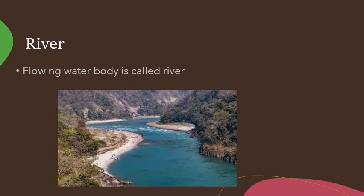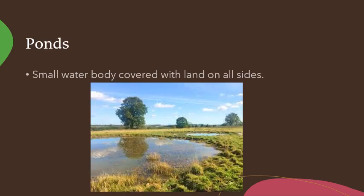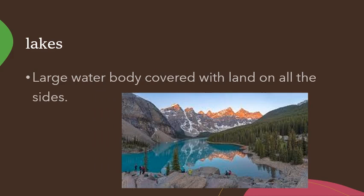Now in rivers, there are different kinds — some are rain-fed rivers and some are snow-fed rivers. Then the next one is ponds. Ponds are small water bodies covered with land on all sides. Please write it down in your textbook: small water bodies covered with land on all sides. Lakes means large water bodies covered with land on all sides.